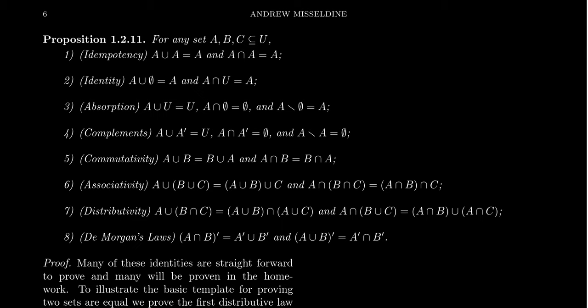The last property, the De Morgan laws, tells you that the complement of (A intersect B) is the union of A-complement and B-complement. And the complement of (A union B) gives you the intersection of A-complement and B-complement. The De Morgan laws tell you how the complement interacts with these operations — it toggles between them. The complement of a union is an intersection, and the complement of an intersection is a union.